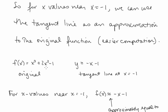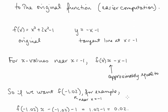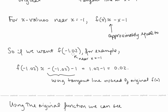For f of x equals x to the third plus 2x squared minus 1, our tangent line at x equals negative 1 is y equals negative x minus 1. So for x values near x equals negative 1, we can say f of x is approximately equal to negative x minus 1. For example, to find f of negative 1.02, which is near x equals negative 1, we plug it into the tangent line: negative of negative 1.02 minus 1, which gives us 0.02. This is a linear approximation.